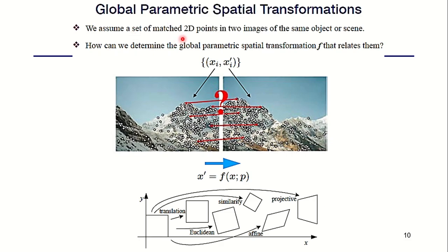Global parametric spatial transformations. We assume a set of matched 2D points in two images of the same object or scene. How do we determine the global parametric spatial transformation that relates them? We use the function f which relates those two points. The image point in the first image is xi and the next one is xi prime which is your predicted value, where xi prime is the function of x comma p.